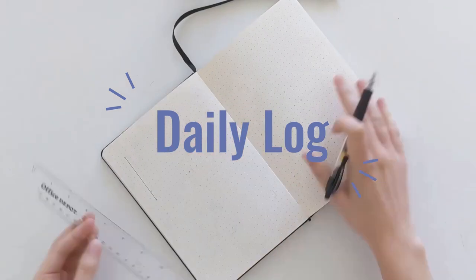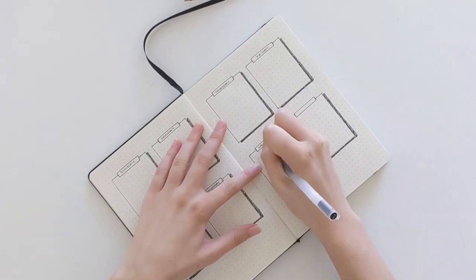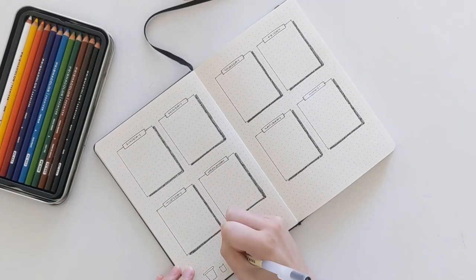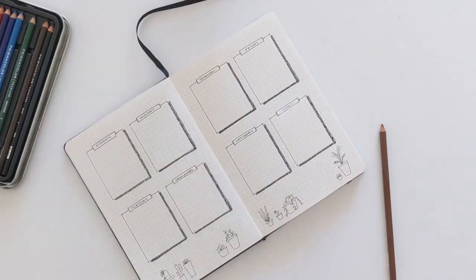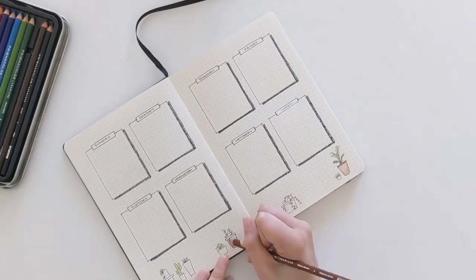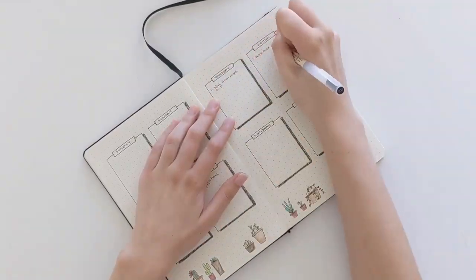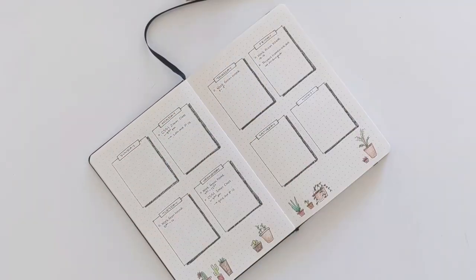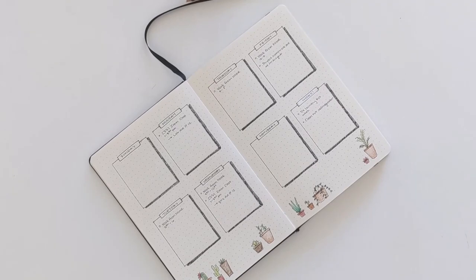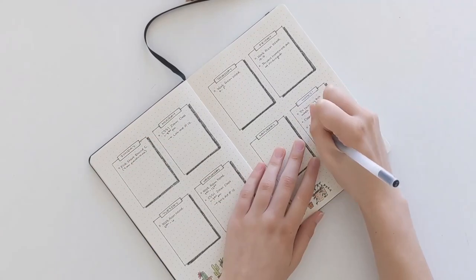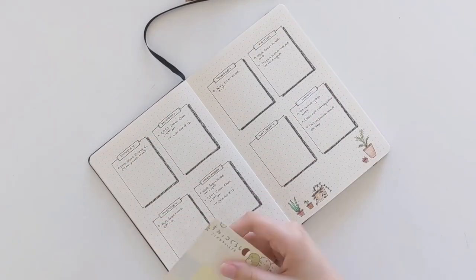Lastly, we have the daily log, which is a key page of a bullet journal. It looks different for everyone because everyone uses their journal in a different way on a day-to-day basis. For some people, one day might take up a whole page, such as if you want to keep a diary in your bullet journal. Others might prefer a weekly grid, where they can plan out their work or school schedules and balance to-dos.